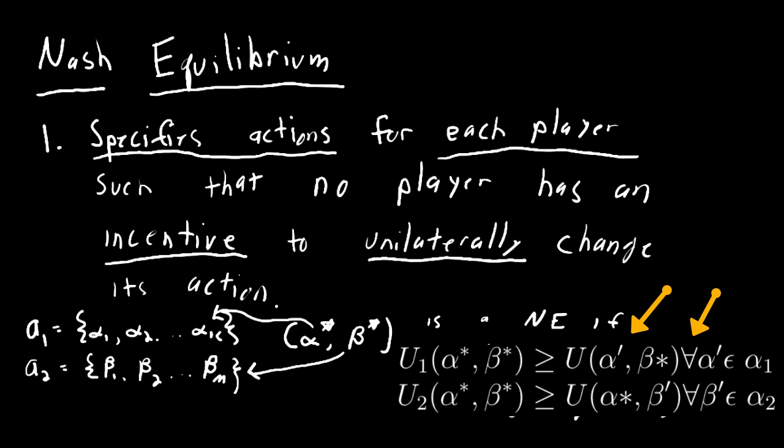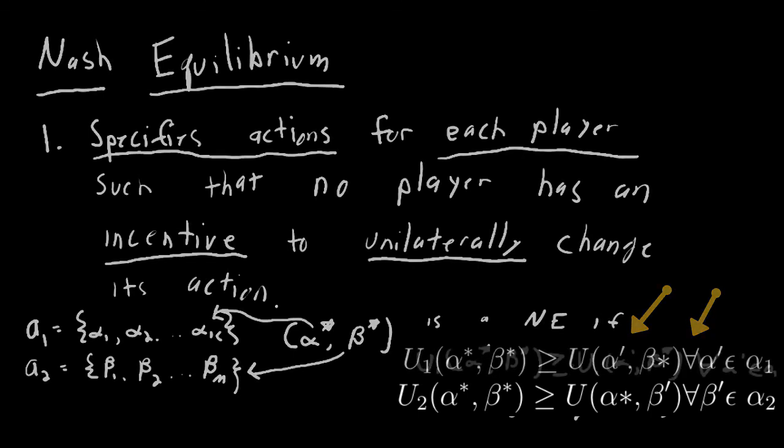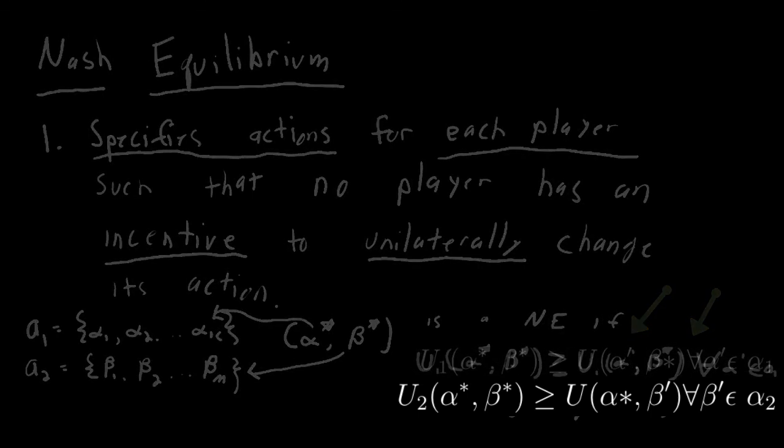Again, I want to emphasize that this definition can just keep going to represent three, four, five, six, seven, as many players as you want. I just illustrated in this case for two players. Stay with me. In the next lesson, we're going to actually find the Nash Equilibrium of the Prisoner's Dilemma and see this at work.